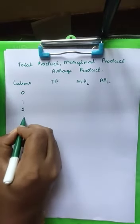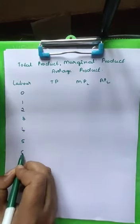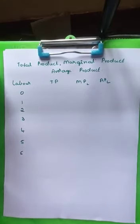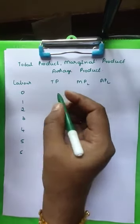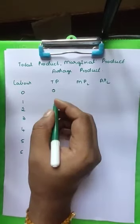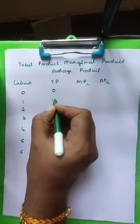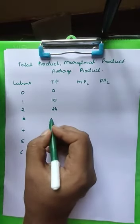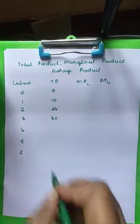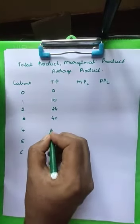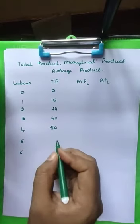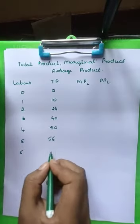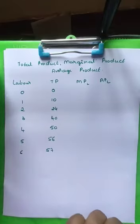The number of labor units we are going to take are 0, 1, 2, 3, 4, 5, and 6. The total product is given to us: when labor is 0, TP is 0; when labor is 1, TP is 10; when labor is 2, TP is 24; when labor is 3, TP is 40; when labor is 4, TP is 50; when labor is 5, TP is 56; and when labor is 6, TP is 57. These are just numbers given for us to do the calculation.